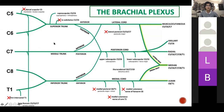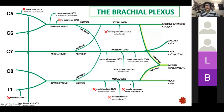The important branches include serratus anterior with your long thoracic, latissimus dorsi with your thoracodorsal, and the muscles in the rotator cuff. So your subscapularis from your upper and lower subscapular nerves, supraspinatus and infraspinatus from your suprascapular, and teres minor comes off your axillary. The easiest way to learn the brachial plexus is to draw it out a few times — draw the ghost of it, then mark in the branches.